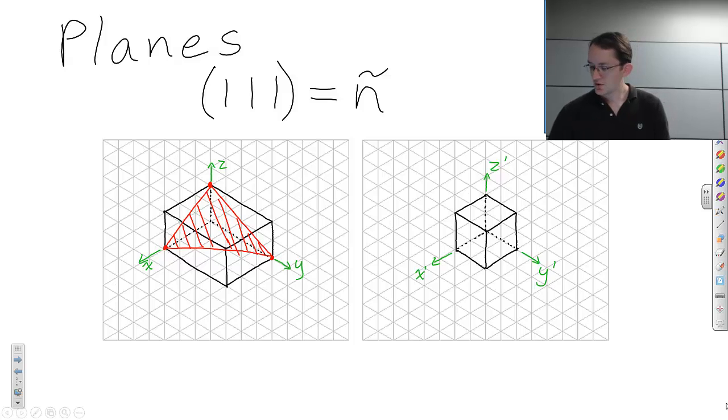Now, if we drew the (1 1 1) plane in the cubic system, it will intersect the x-axis at one unit cell distance, the y-axis at one unit cell distance, and the z-axis at one unit cell distance. If we draw the plane for this (1 1 1) normal vector, we'd see that it's this plane right here.